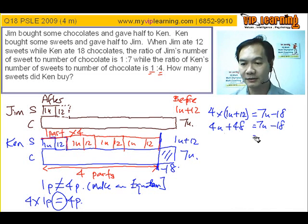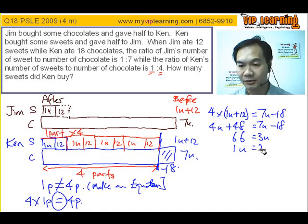Throw this over, we are going to have three unit. Seven minus four is three unit. Minus eighteen, throw it over, becomes a positive. So, it's forty-eight plus eighteen, giving you sixty-six. Therefore, one unit equals to sixty-six divided by three is twenty-two.